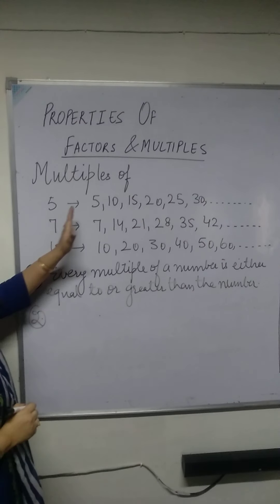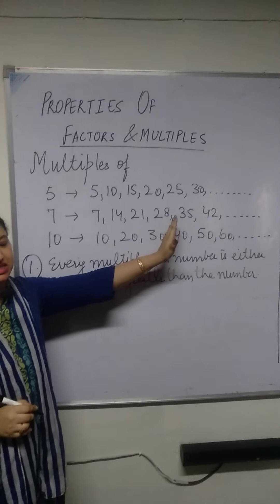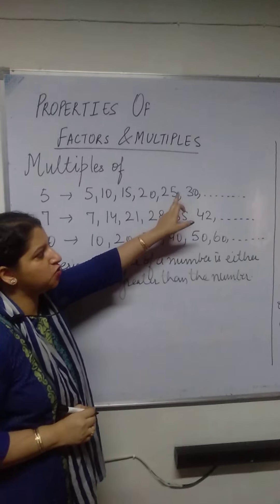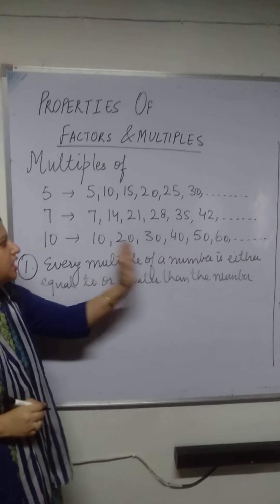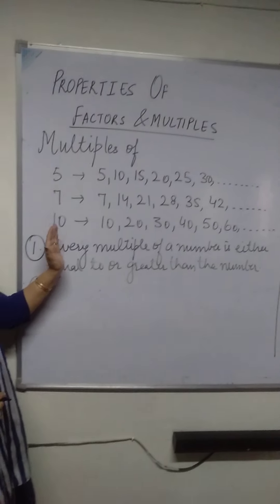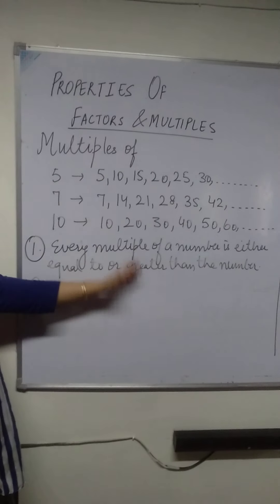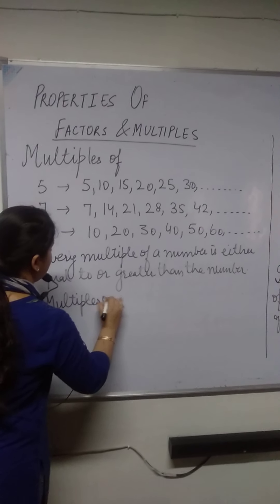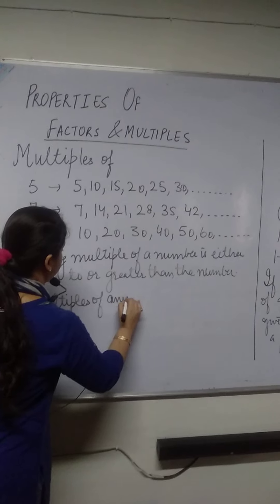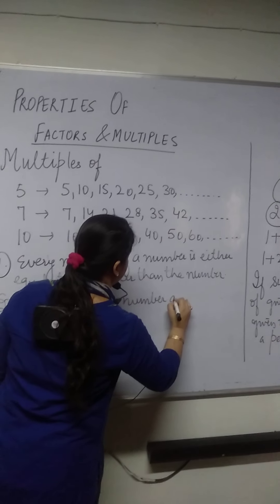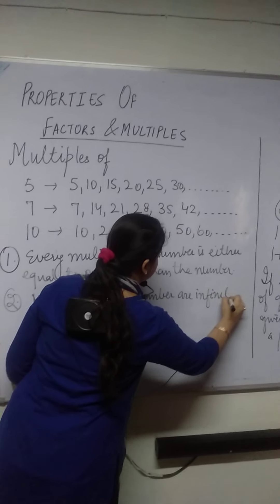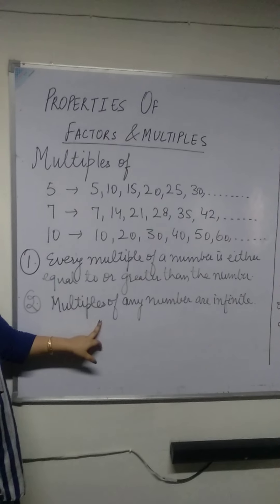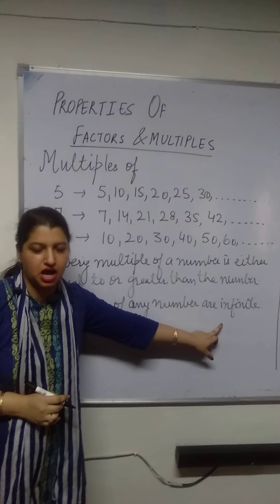Secondly, if I start with 5 and keep on writing the multiples, there are endless multiples for every number. Here I have stopped at 30 but you can write as many multiples as you want. In case of 7 also, in case of 10 also, and in case of any other number you want to find the multiples — multiples of any number are infinite. In case of factors, the factors are finite, but in case of multiples, they are infinite, meaning they are uncountable.